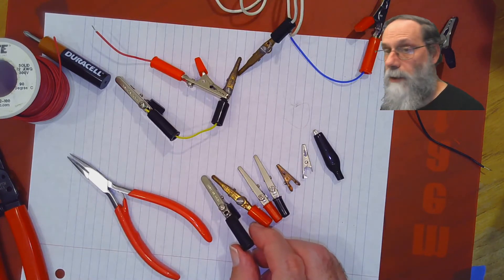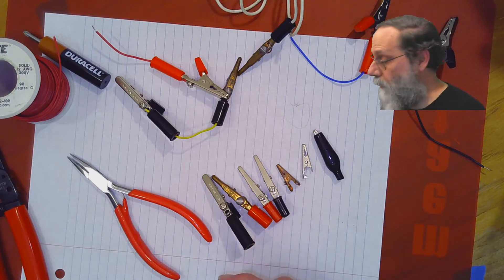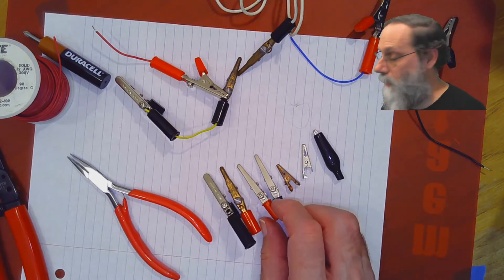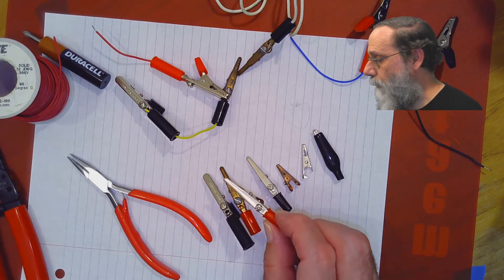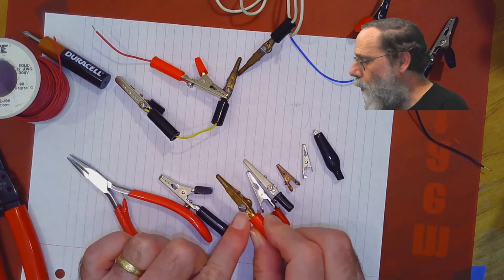Now, the large alligator clips can take fairly large wires. Smaller ones generally use slightly smaller wires. There's two different ways this hole generally gets done.